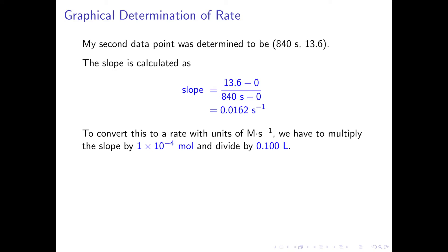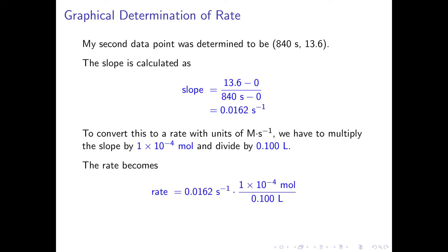To convert this to a rate with units of molar per second, we multiply the slope by 1 times 10 to the negative 4 mole and divide by the total volume of the solution, which is 0.100 liters. Thus, the rate becomes 0.0162 per second times 1 times 10 to the negative 4 mole divided by 0.100 liters, or 1.6 times 10 to the negative 5 molar per second.